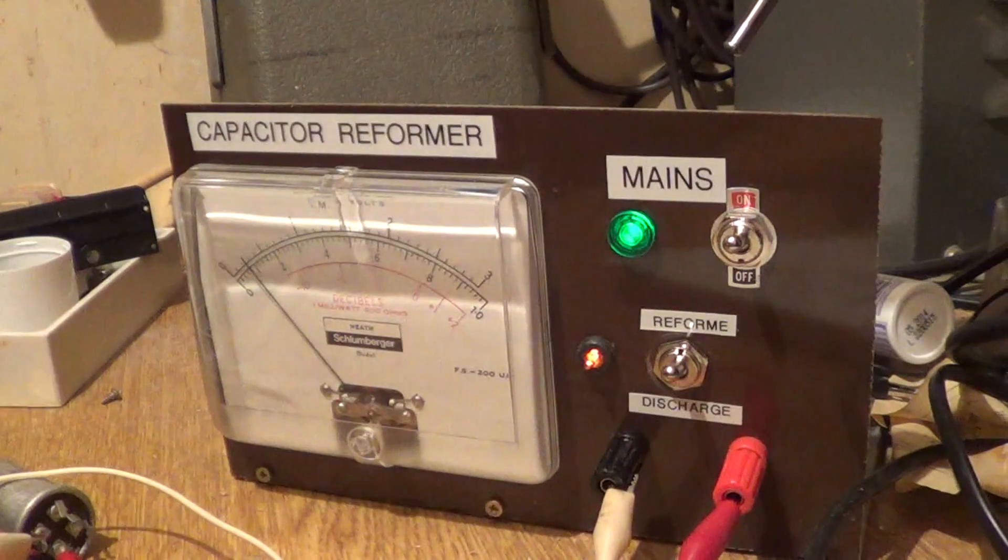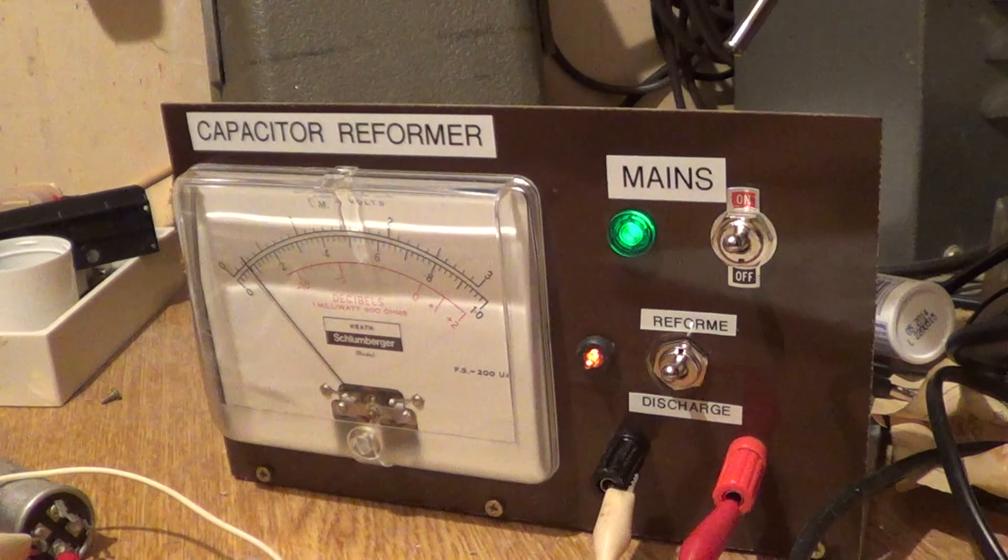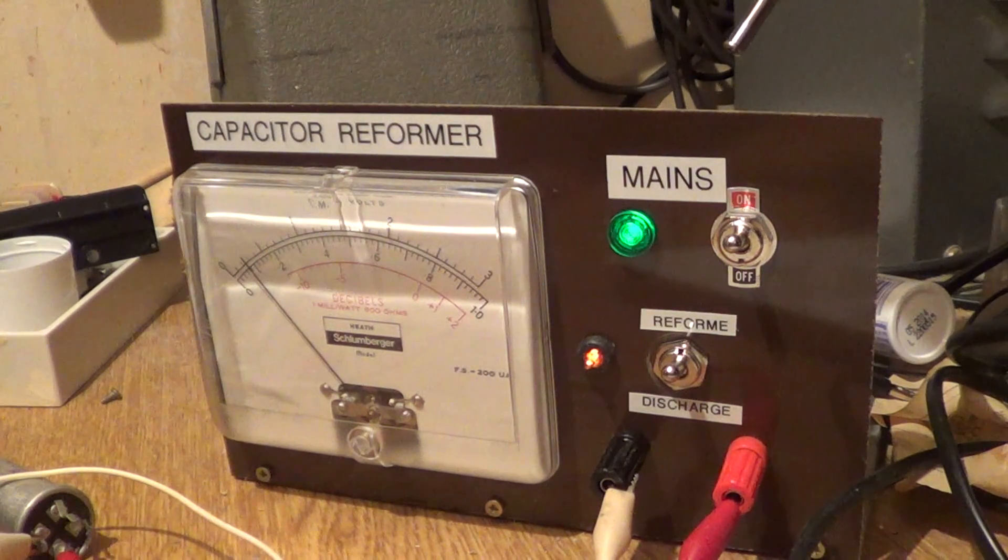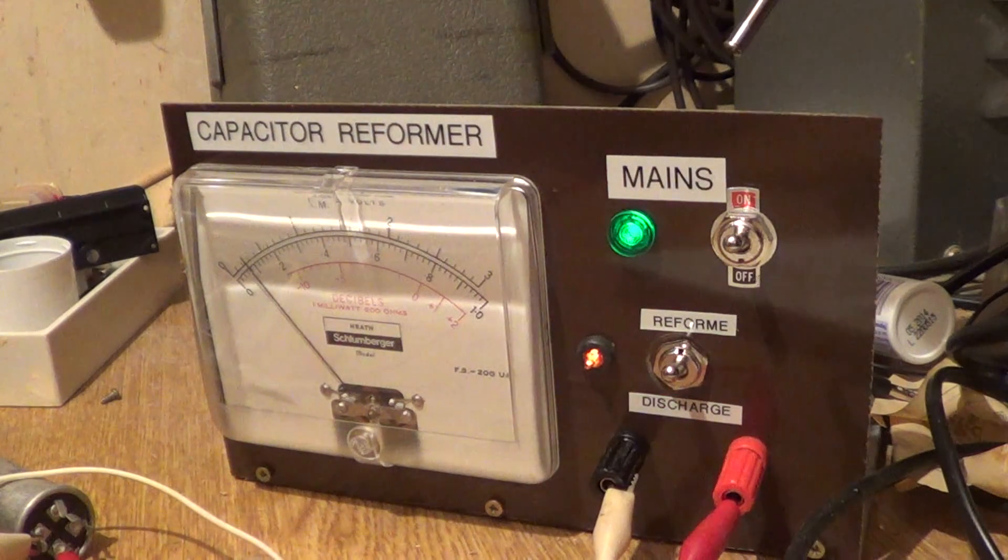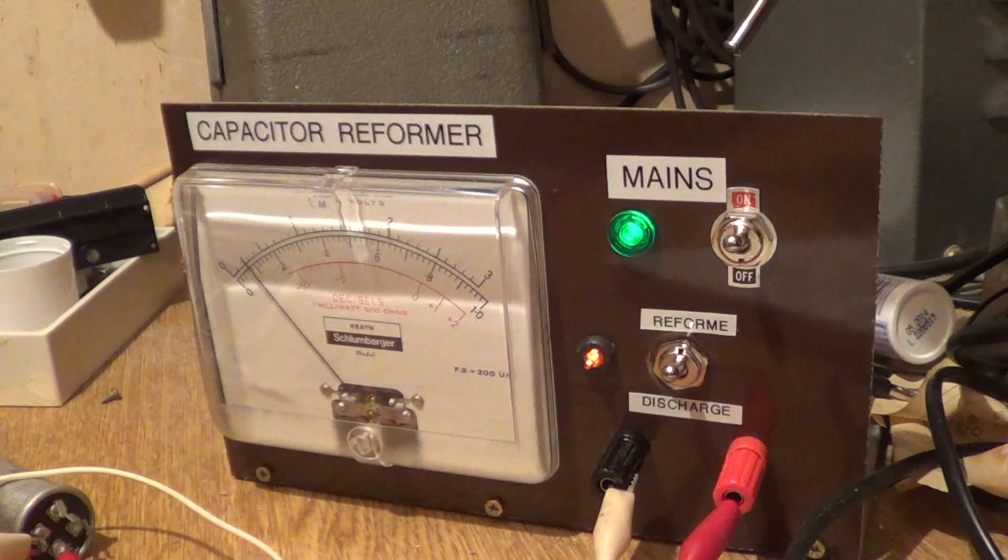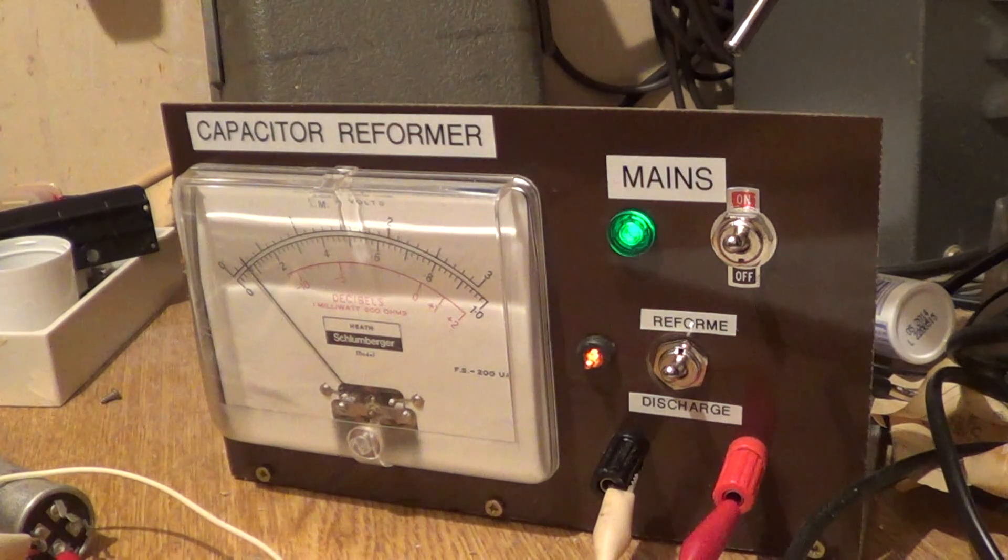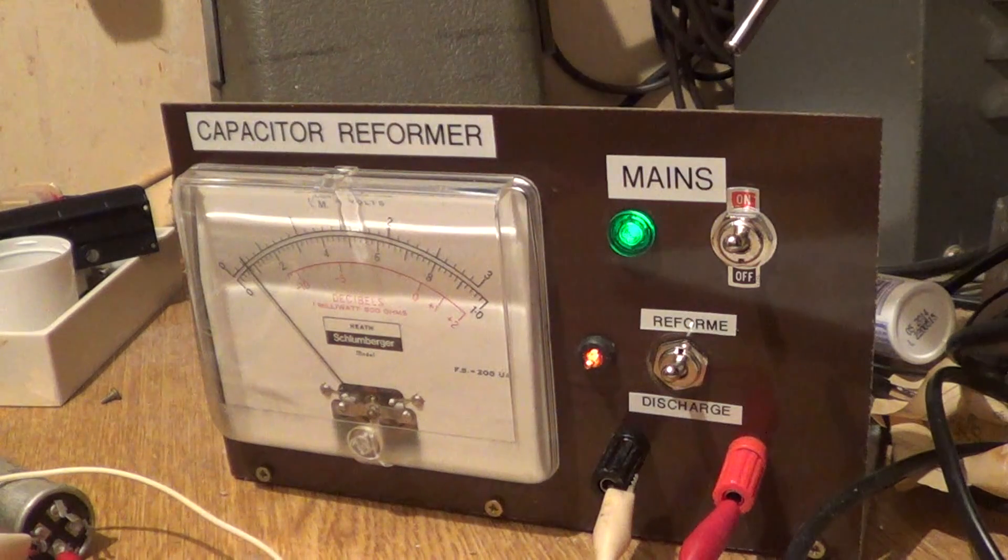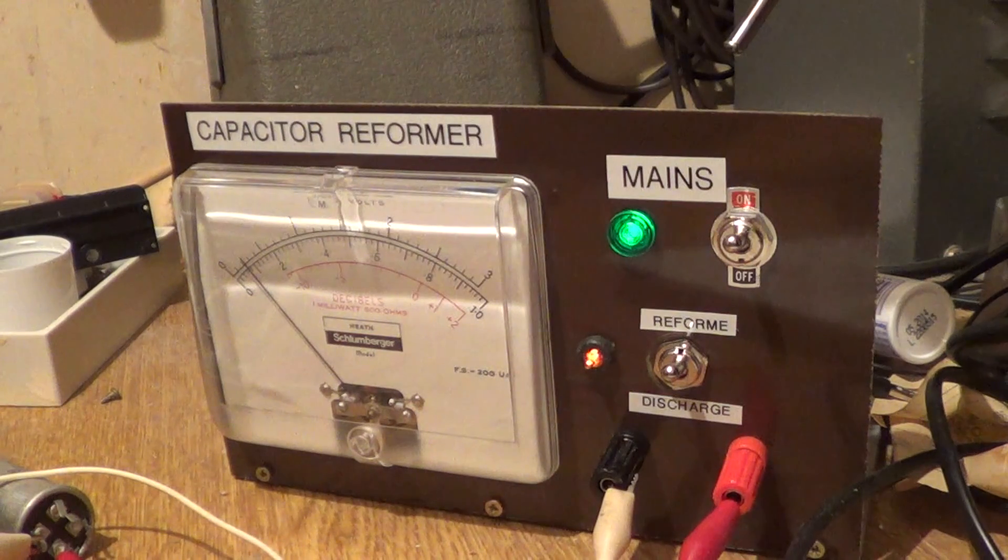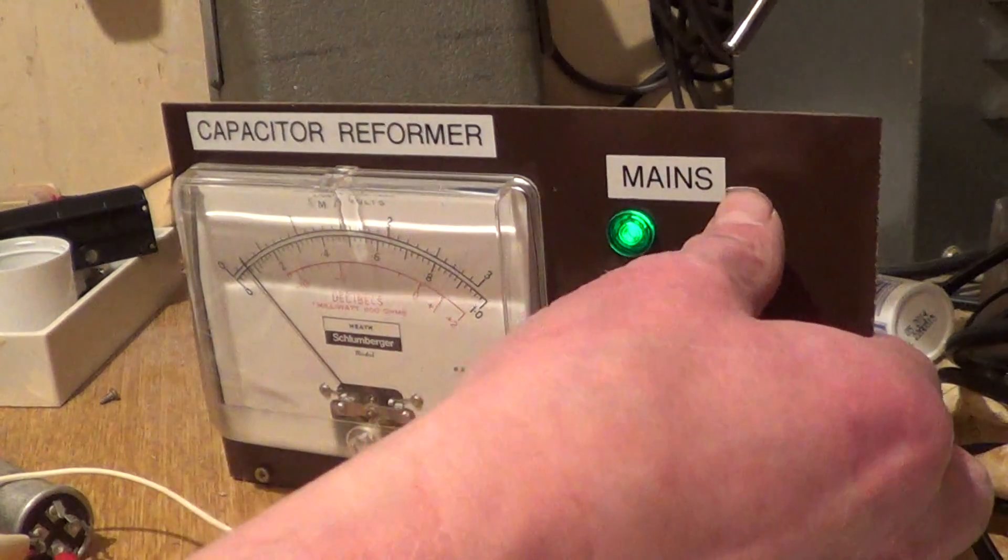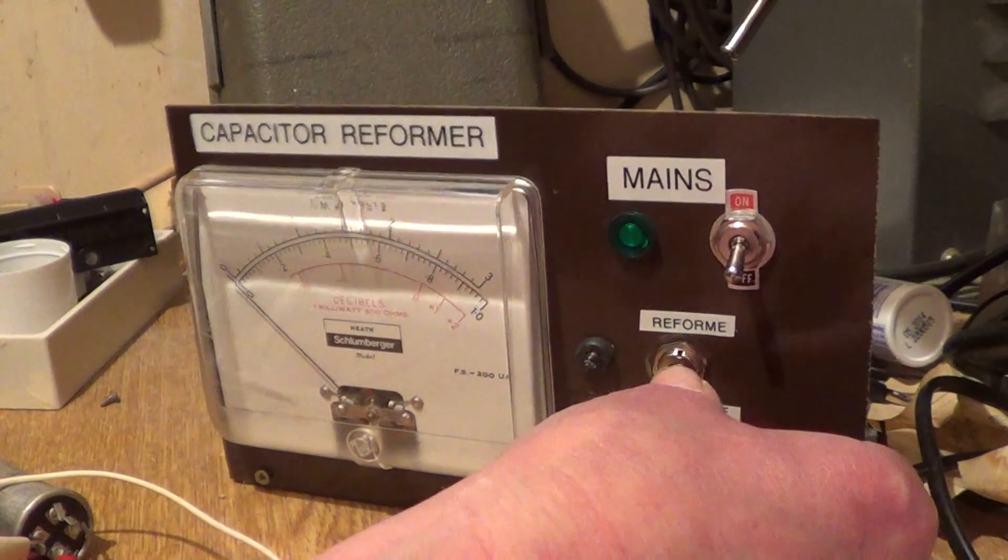After a very short time, we can see that we're down to less than a quarter of a microamp. The neon has got dimmer. Like I say, it will not go completely to zero because it's an electrolytic, but this capacitor is now fine to use. Turn that off, and if you watch the meter and the diode when I press discharge.